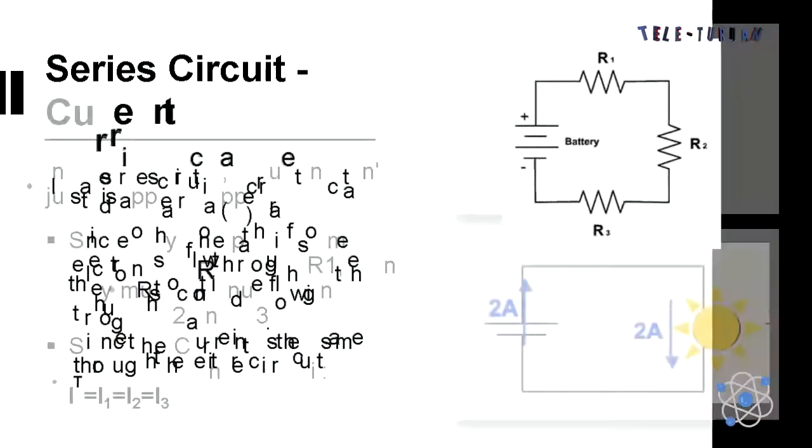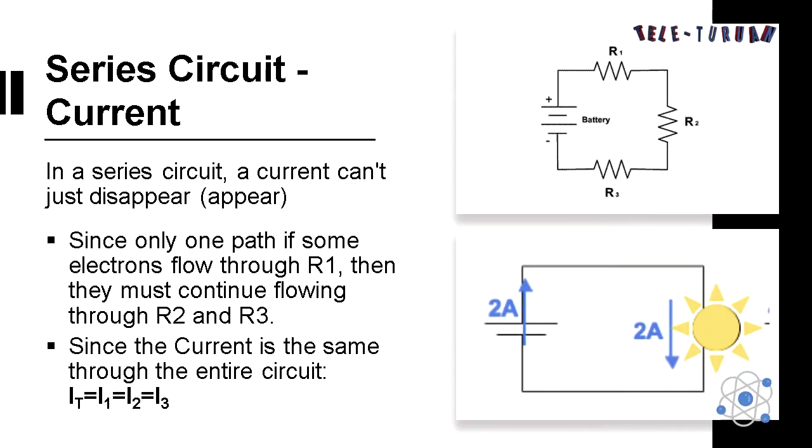Series circuit in terms of current: In a series circuit, a current can't just disappear or appear. Since there's only one path, if some electrons flow through, then they have to continue flowing through the other resistors. The current is the same in the entire circuit.